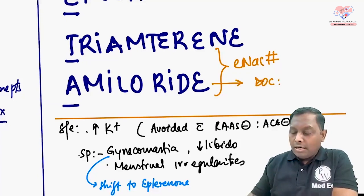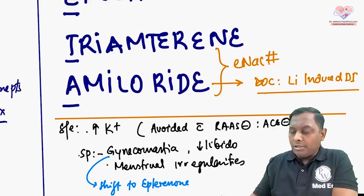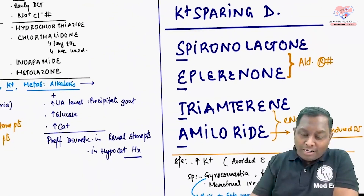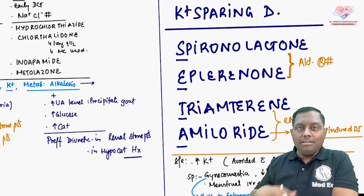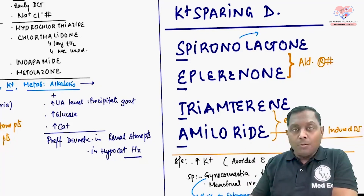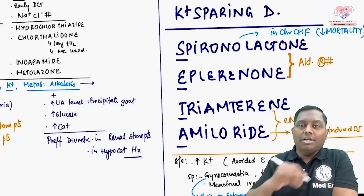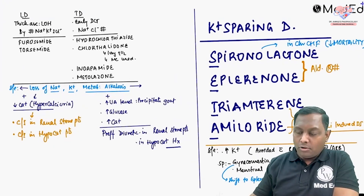Amiloride is considered the drug of choice in lithium-induced diabetes insipidus. Additionally, spironolactone is used in patients with chronic congestive heart failure and has mortality-related benefits — it decreases mortality.